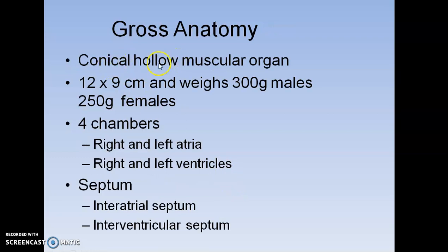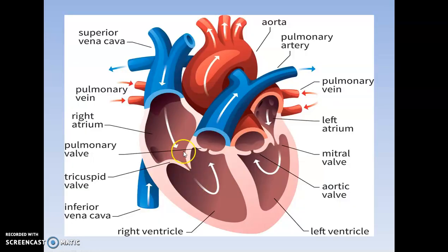This is the gross anatomy of our heart. It is a conical hollow muscular organ, 12 x 9 cm, weighing 300 grams in males and 250 grams in females. There are four chambers: right and left atria, right and left ventricles. There is also the intra-atrial septum and intraventricular septum.